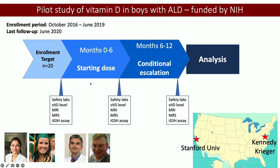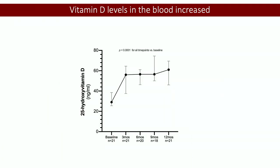Some time ago we set up a vitamin D pilot study. We enrolled 21 children in total at two sites — Stanford and Kennedy Krieger. This is a single-arm study, meaning everyone got vitamin D. The comparisons were generally between the end of the study and the beginning, so patients are their own controls. This is an important limitation — it does not have a control arm. We did increase vitamin D levels in the blood from a median of about 28 to a median of about 55.